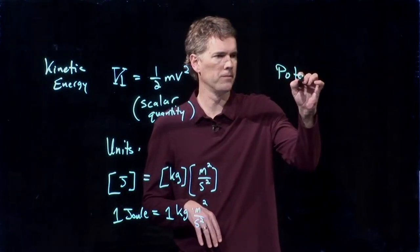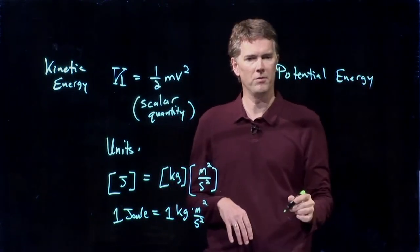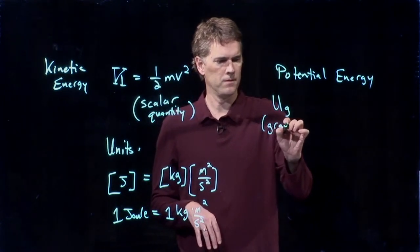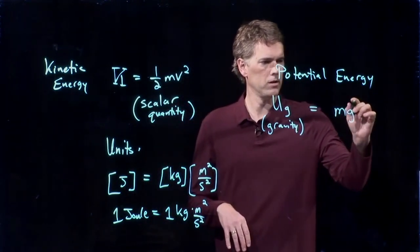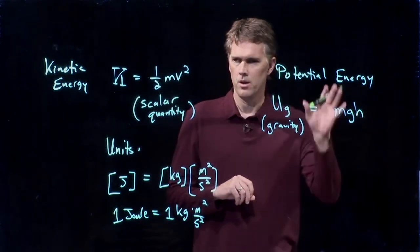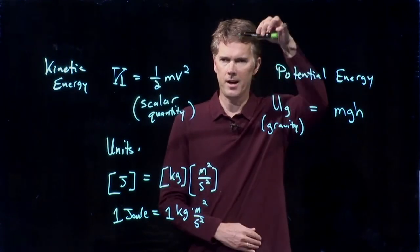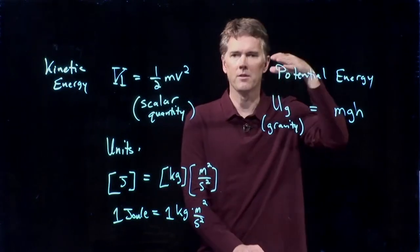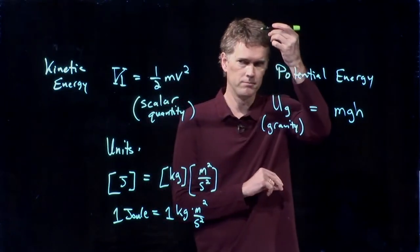What about potential energy? Well, potential energy comes in a few different forms. One of them is gravity. And gravity, potential energy, is MGH. The higher you go above the surface of the Earth, the more potential energy you have. If I lift this pen higher and higher, it has more potential energy, meaning if I drop it, it's going to be going faster when it comes back down, the higher I start from.